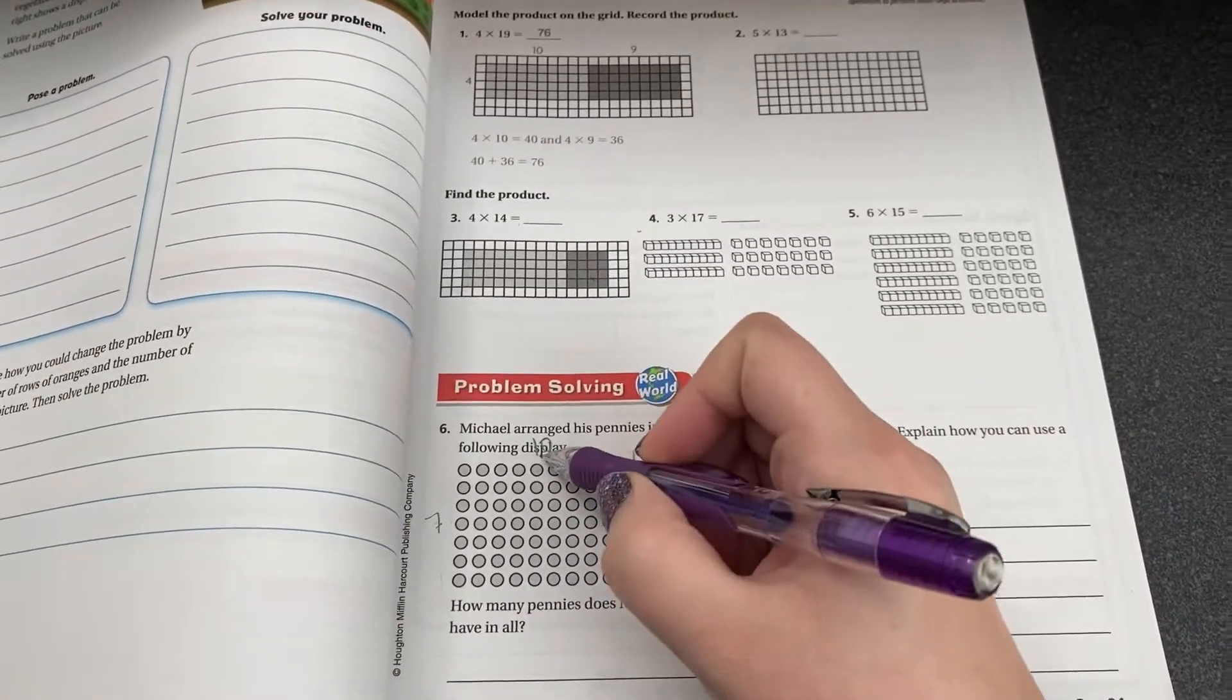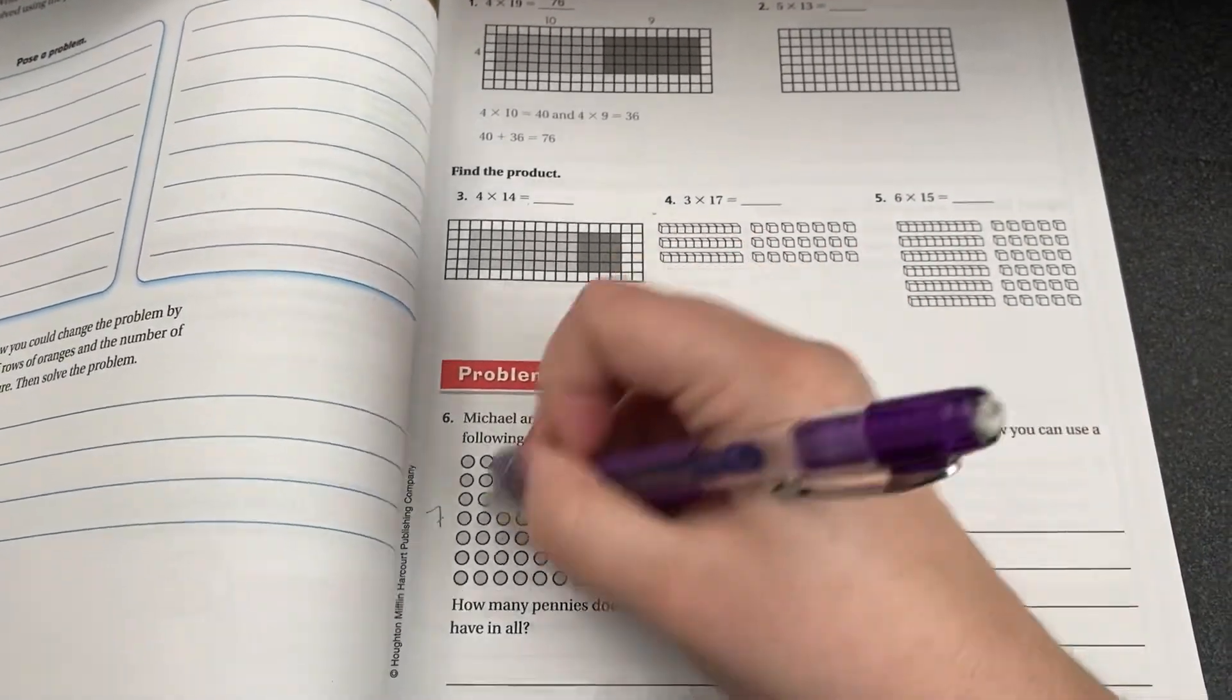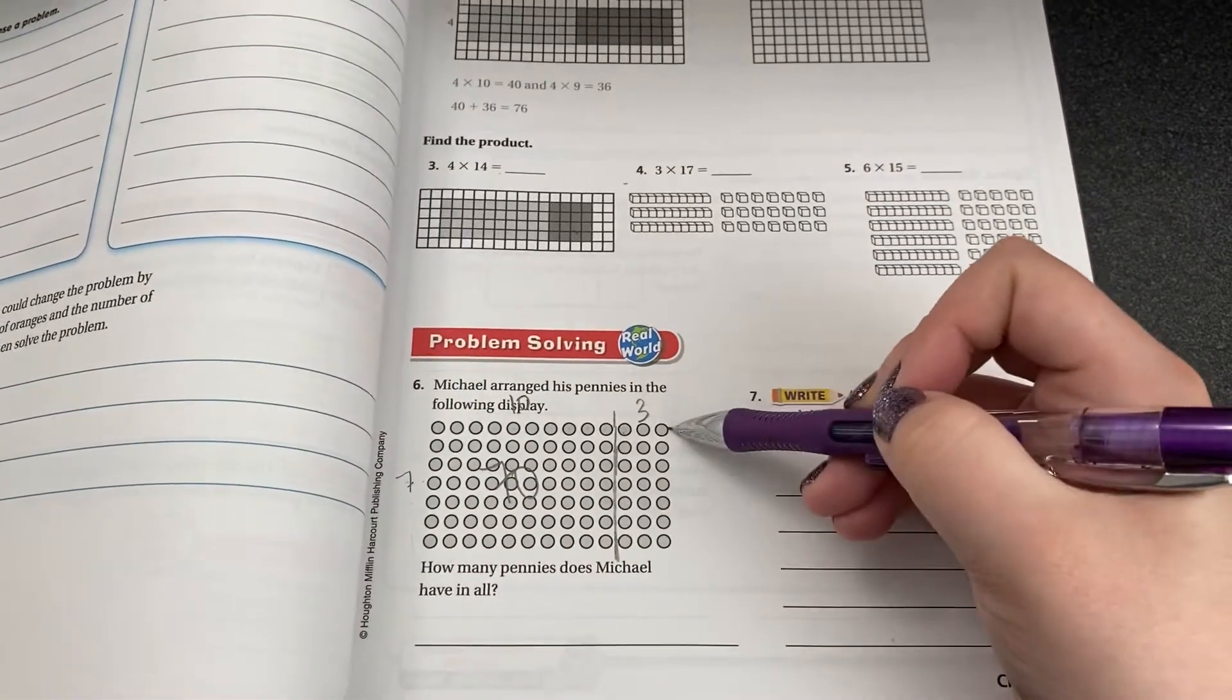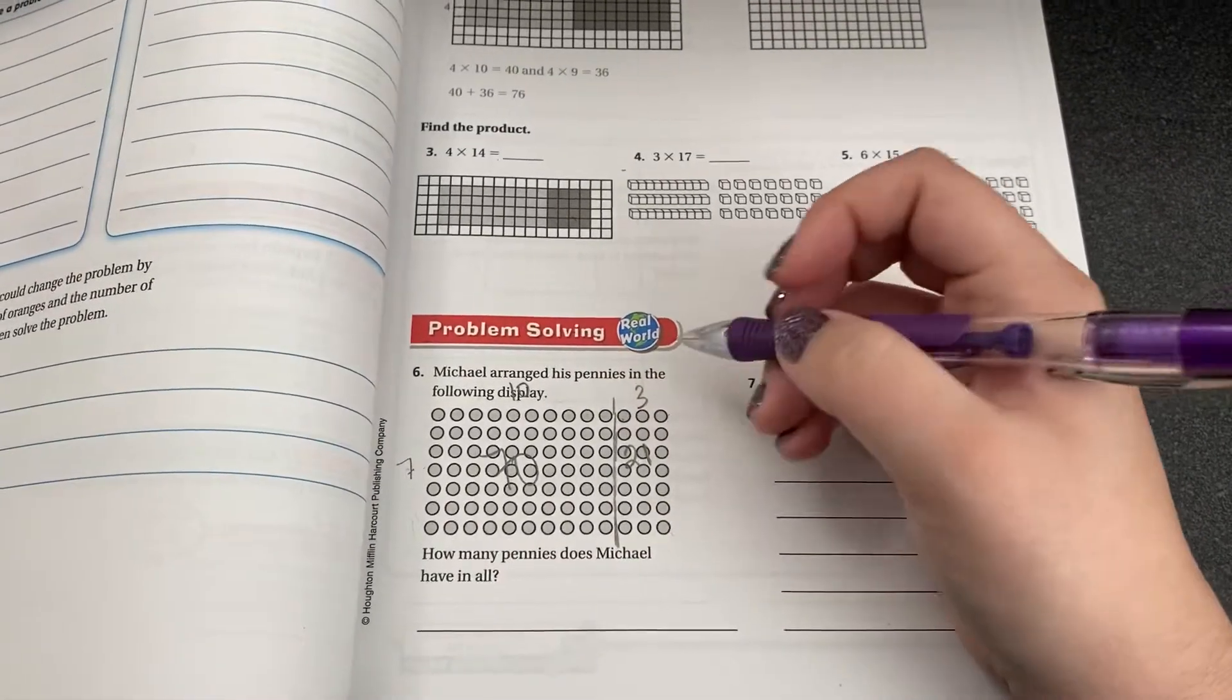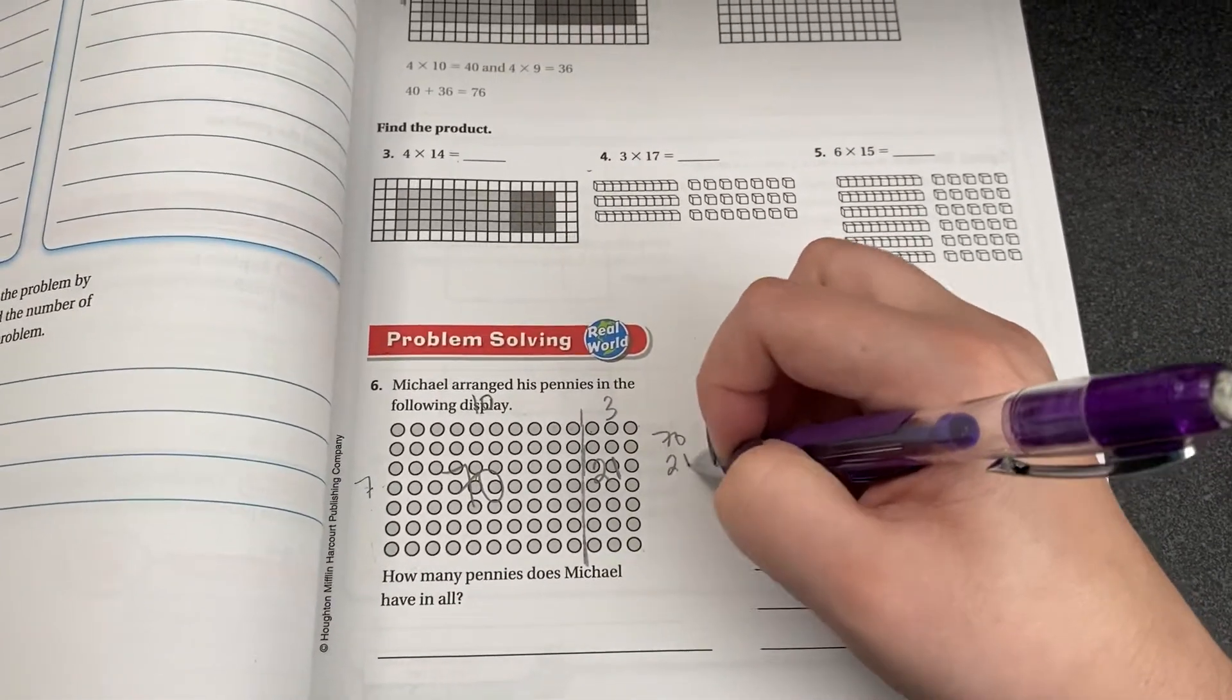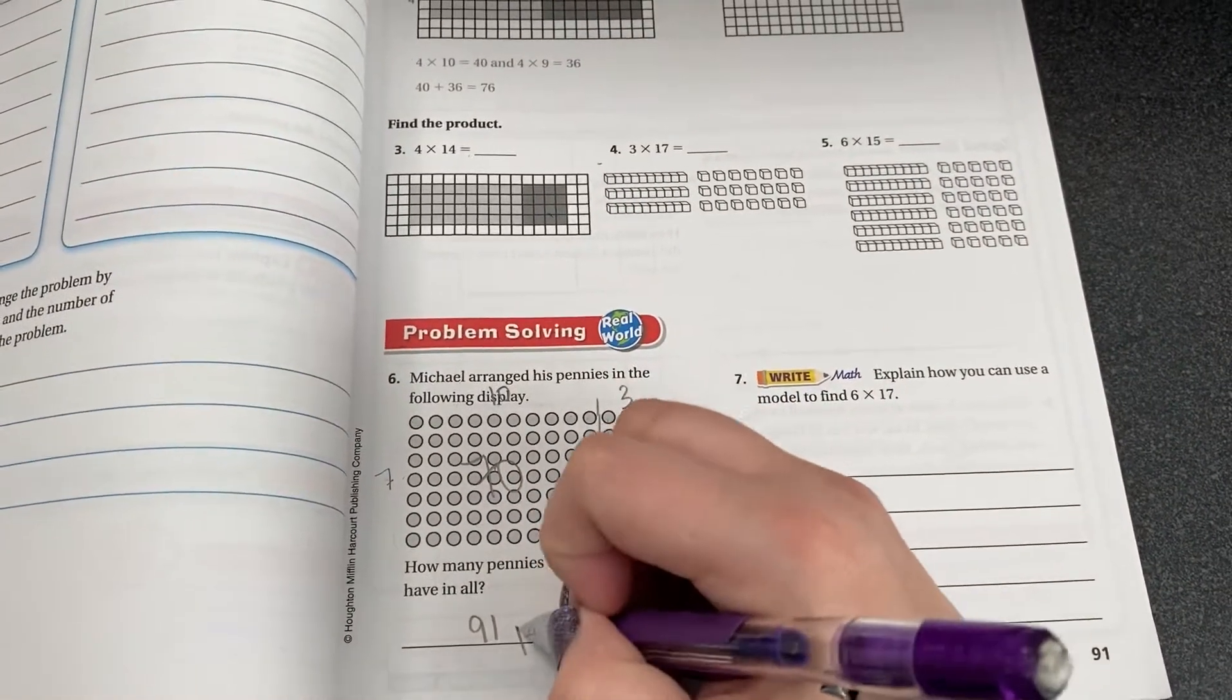So if I have seven groups of ten, that's ten, twenty, thirty, forty, fifty, sixty, seventy. So I've got seventy pennies in this group right here. And if I have seven times three, I know that seven times three is twenty-one. So all together he has seventy pennies plus twenty-one pennies. And boom! He's got ninety-one pennies.